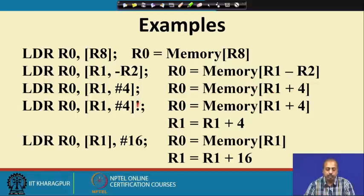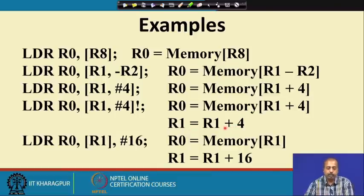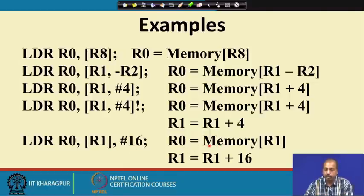Then we can have post-increment. The exclamation mark identifies it as post-increment. So LDR R0, [R1, #4]! means R0 gets the content of memory location R1 + 4, and simultaneously R1 is incremented by 4. Another way of writing this: LDR R0, [R1], #16 — here R0 gets the content of memory location R1, and then R1 is incremented by 16. These are the different instruction formats available for the LDR instruction.